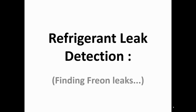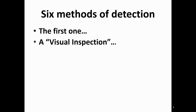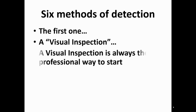This lesson is refrigerant leak detection. There are six methods of detection. We'll be able to cover two of them today. The first one is called a visual inspection. A professional knows that's always how to start. A professional is going to do a visual inspection. He knows what to look for.